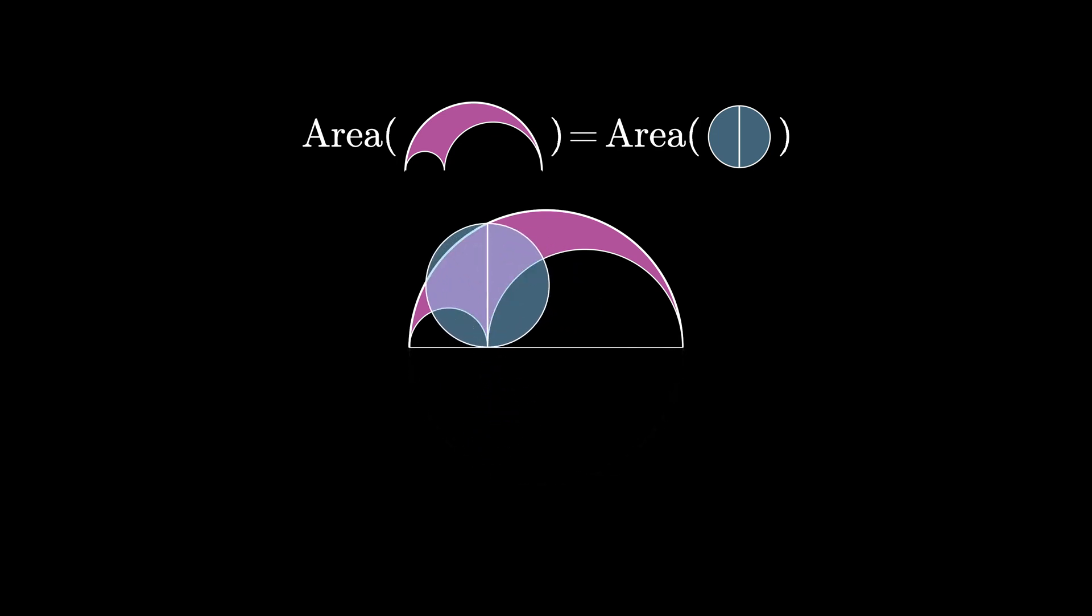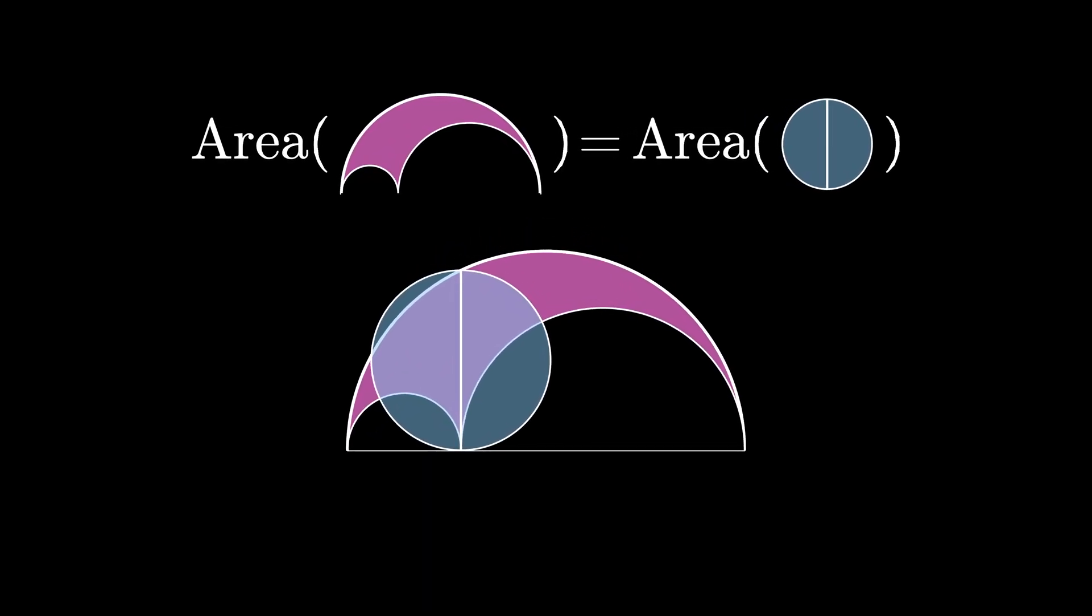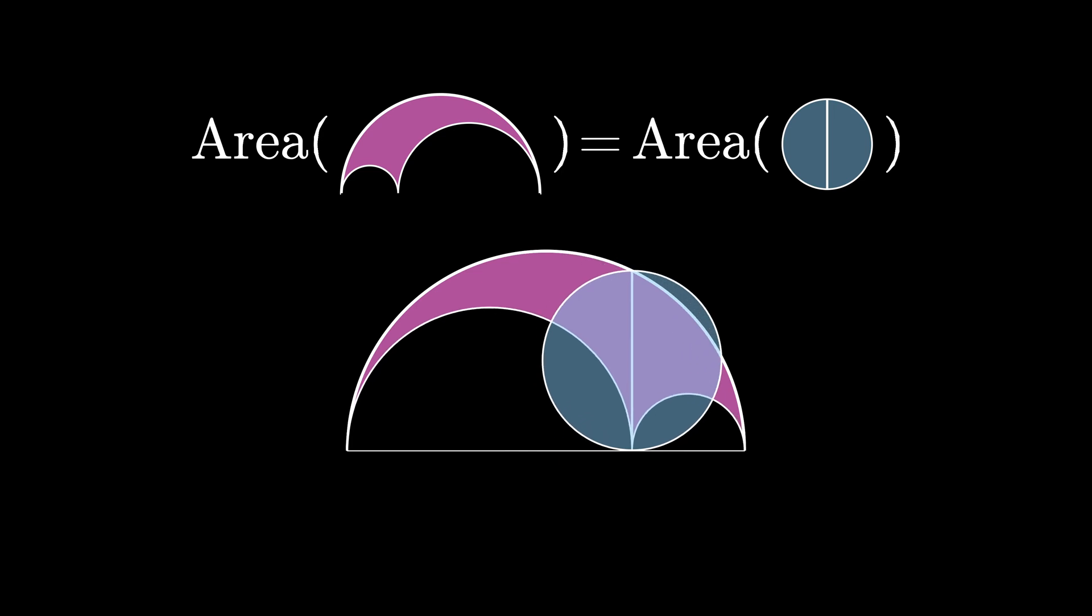But remember that the sum of the blue areas was equal to the sum of the pink areas and therefore the area of the arbelos is in fact equal to the area of the pictured circle.